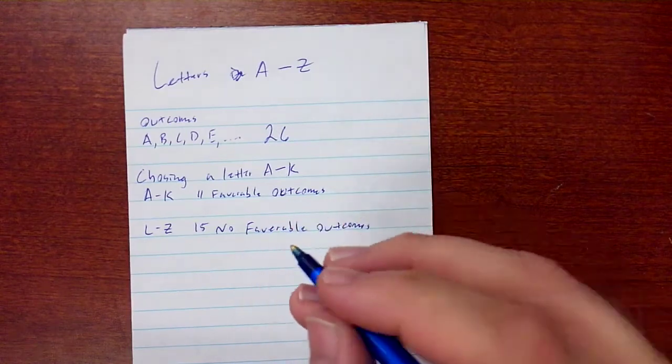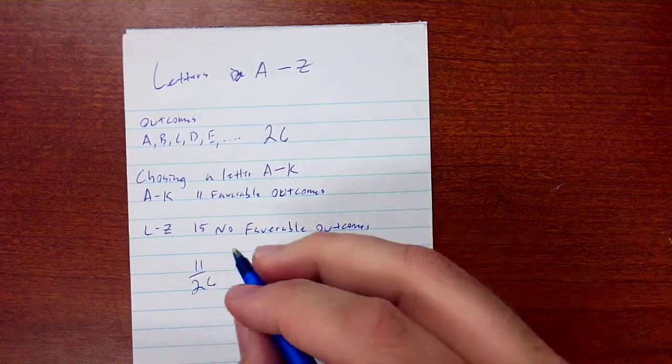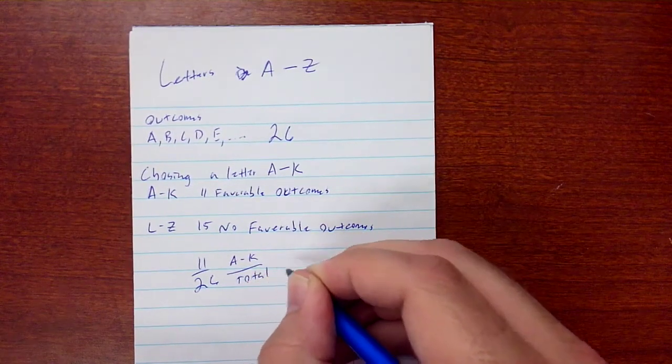We can go ahead and write our probability statement of 11 over 26, where we have 11 A through K over total outcomes.